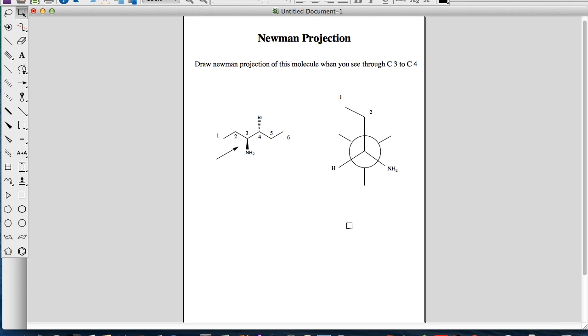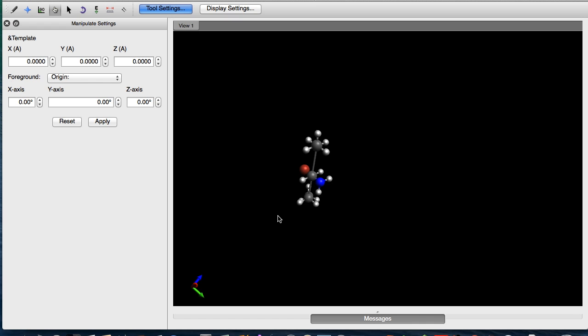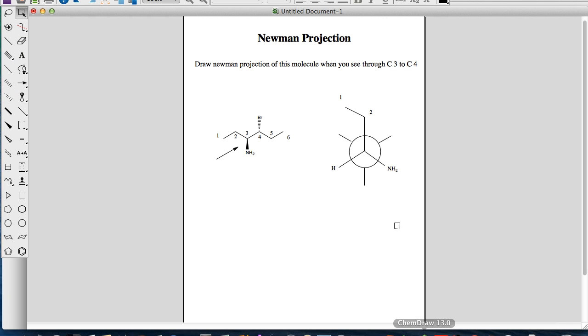So now, we need to deal with the substituents on the carbon-4. So we can see, remember, the bromine on the back is pointing this direction. So we have the bromine here.